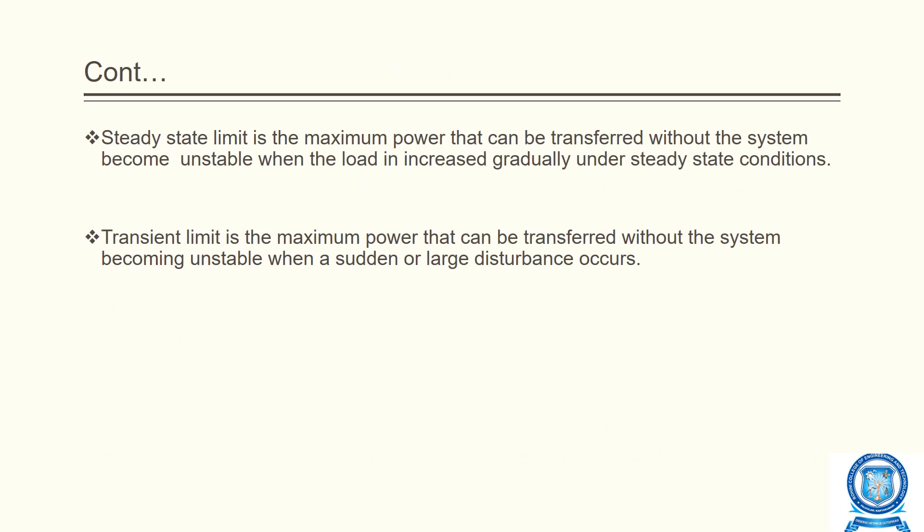The steady state limit is the maximum power that can be transferred without the system becoming unstable when the load is increased gradually under steady state conditions. The transient limit is the maximum power that can be transferred without the system becoming unstable when a sudden or large disturbance occurs.